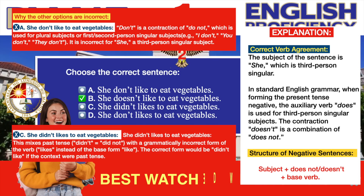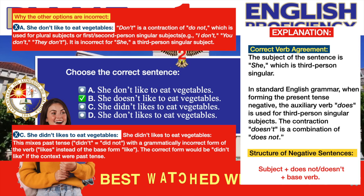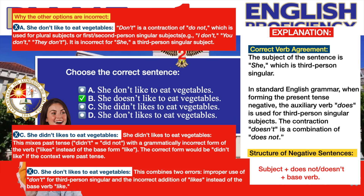Option C, 'She didn't likes to eat vegetables,' is incorrect since it mixes past tense — that is, 'didn't' or 'did not' — with a grammatically incorrect form of the verb 'likes' instead of the base form 'like.' The correct form would be 'didn't like' if the context were past tense. Option D, 'She don't likes to eat vegetables,' combines two errors: improper use of 'don't' for third person singular and the incorrect addition of 'likes' instead of the base verb 'like.'